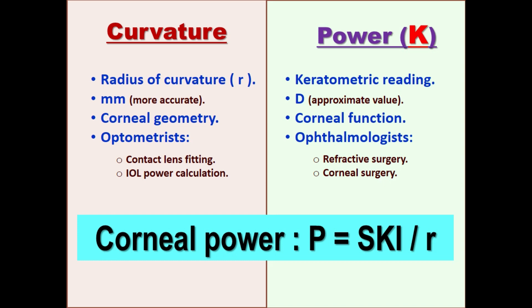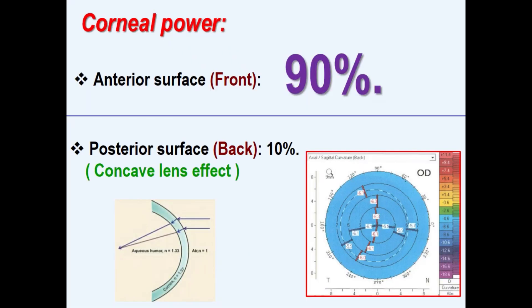On the other hand, corneal power in diopters is used to represent the refractive effect of the cornea in patients undergoing corneal or refractive surgery. The anterior corneal surface represents the most important refractive interface, and minor changes even of a few microns can result in significant refractive effect.